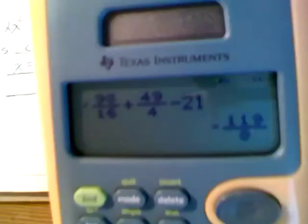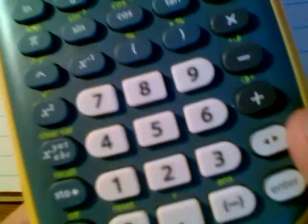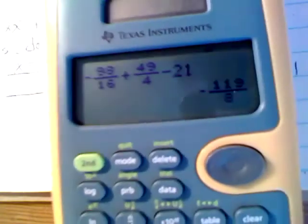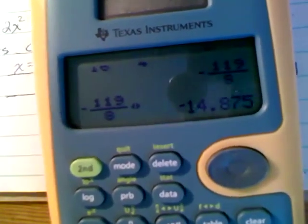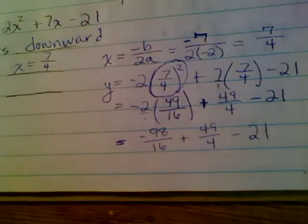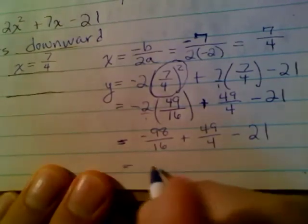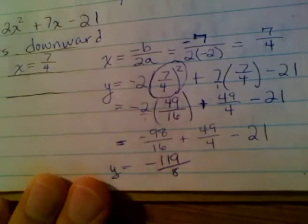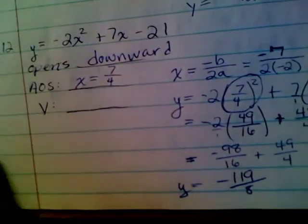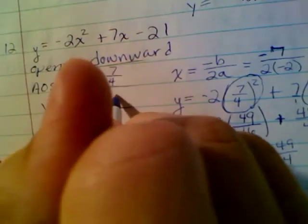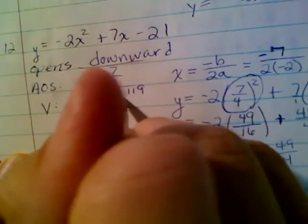Negative 119 over 8. And if you want a different answer, like a decimal, all you have to do is push this little button above the enter sign. Just push that button. Negative 119 over 8 or negative 14.875. I like the fraction, negative 119 over 8. So, here we go. Our answer, 7 over 4, comma, negative 119 over 8.